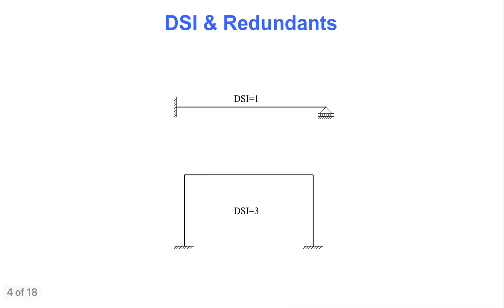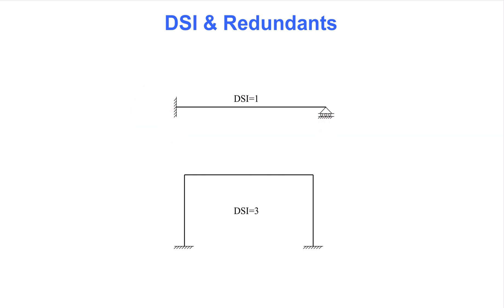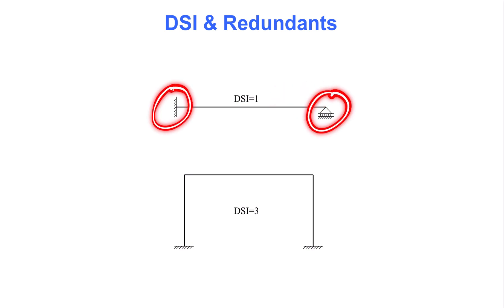We start by acknowledging that the degree of static indeterminacy, DSI, counts the surplus of forces that we are unable to determine by equilibrium equations. For example, for the beam shown here, we have four reaction forces at the supports and three internal forces — a total of seven unknowns. We can set up six equilibrium equations, giving a surplus of one unknown force. In other words, the degree of static indeterminacy is one.